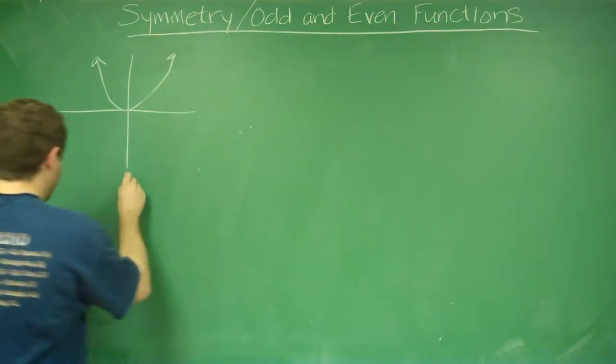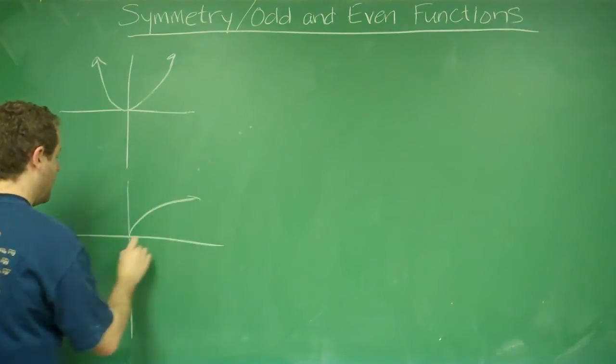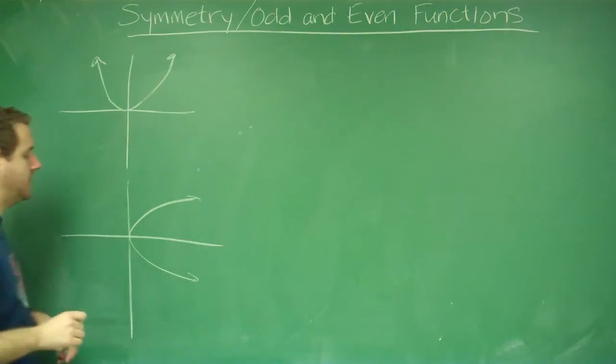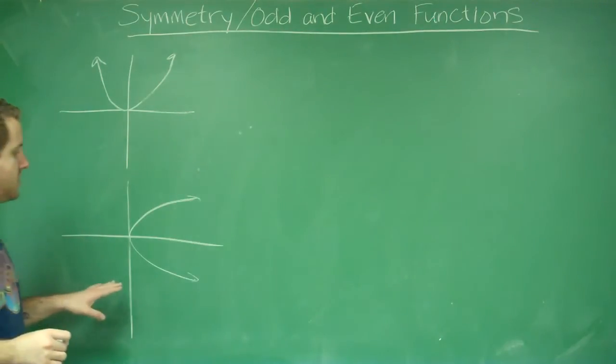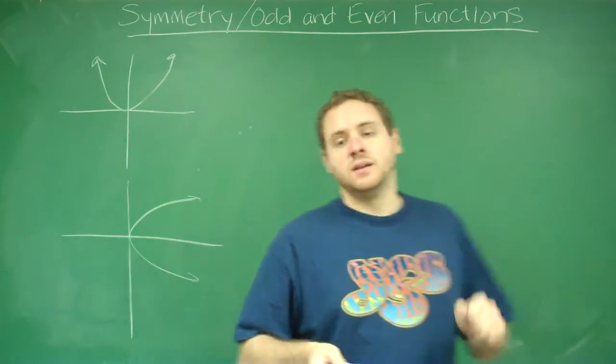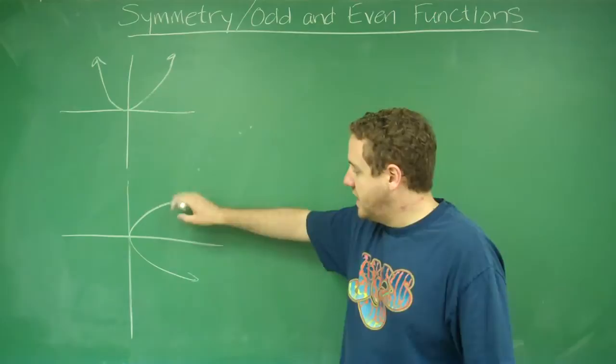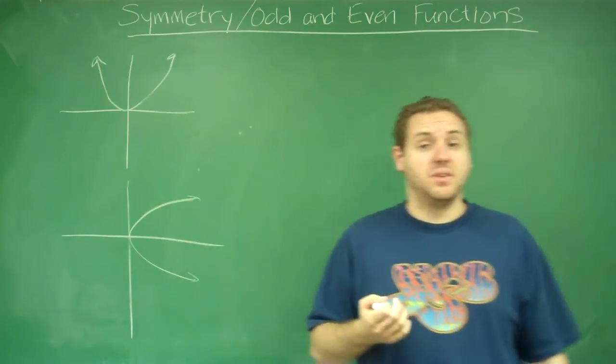If I had something like this, kind of like a parabola on its side, that would be symmetric about the x-axis. Because if I rotated it across the x-axis, I would get the same thing.